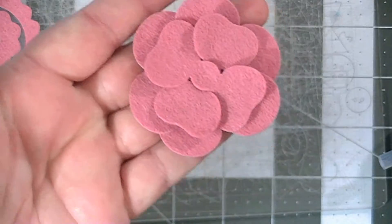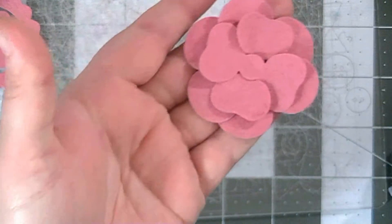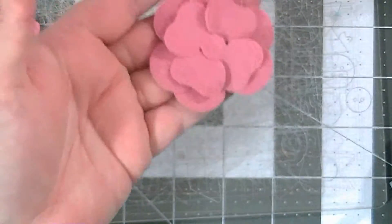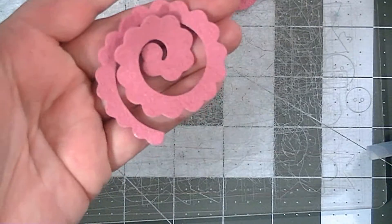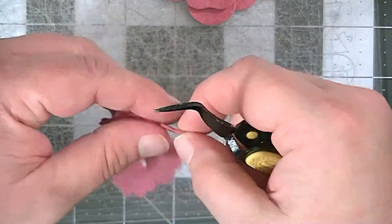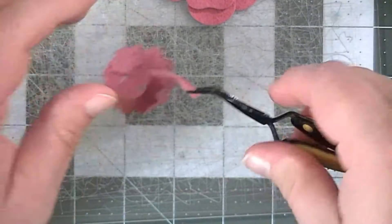Next, we need to work on the top of the flower, the center, and that is this little rolled piece. All you do is take a pair of tweezers and start rolling it.